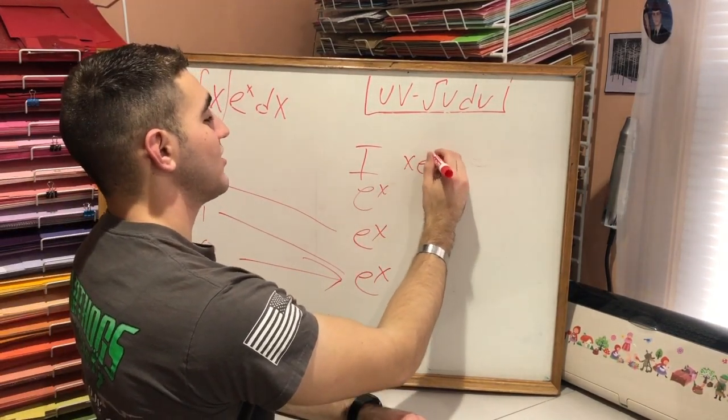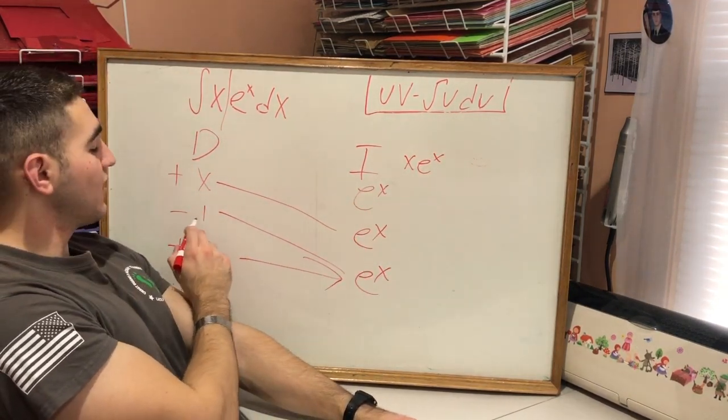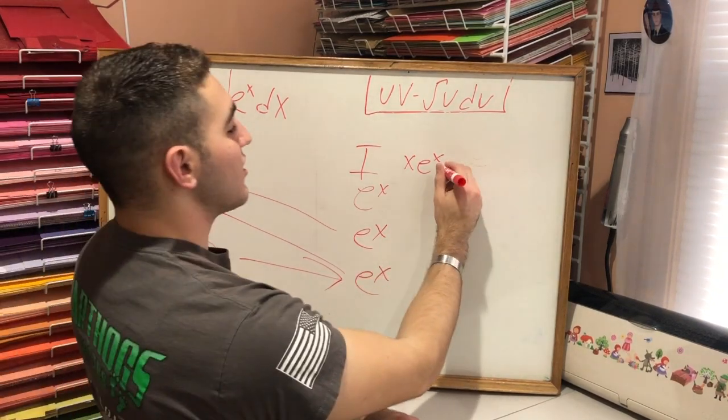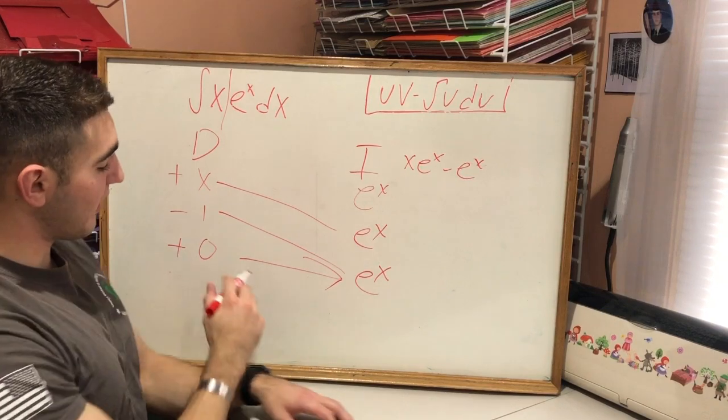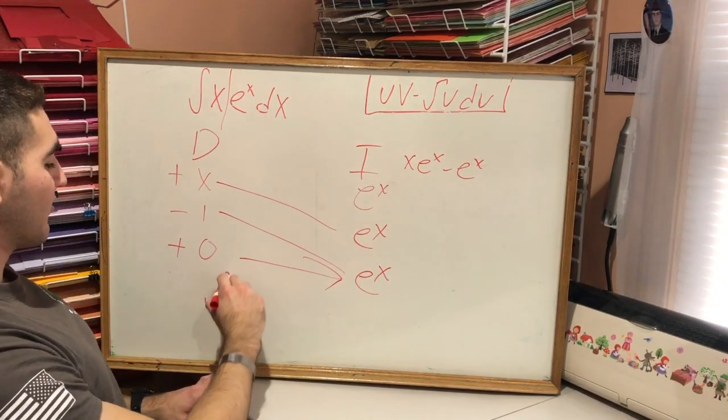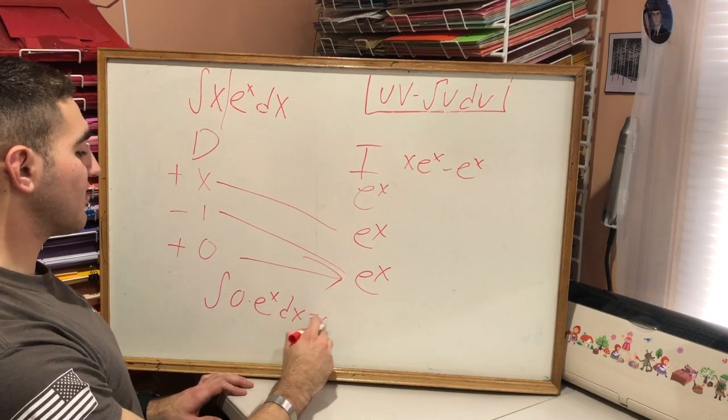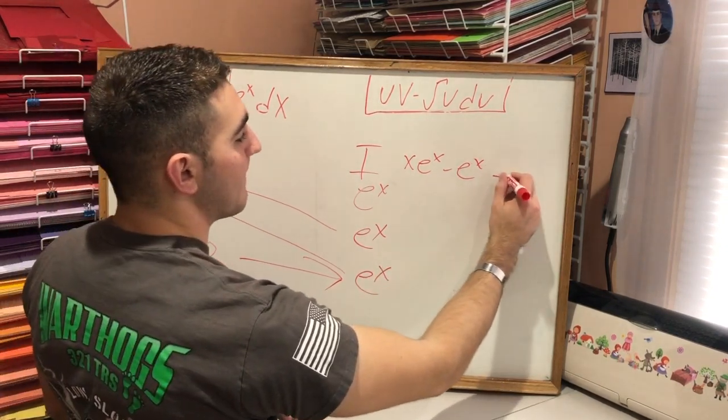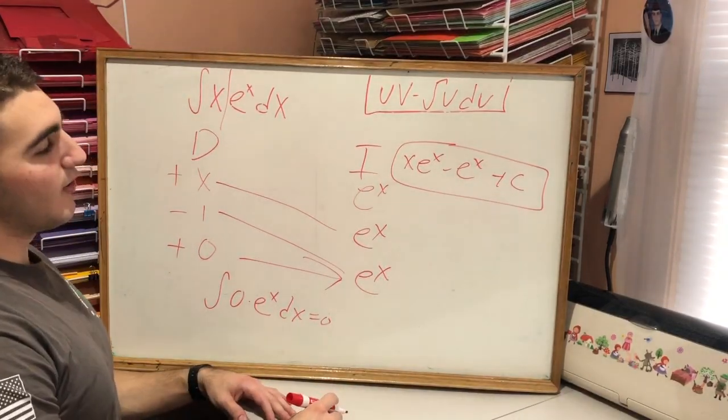Here we go. All right, so x times e to the x is x times e to the x and it's a plus, so we're gonna leave it, nothing in front. And now the next term is gonna be negative because negative 1 times e to the x is minus e to the x. And then now in the end, the last row here, we're gonna take the integral of 0 times e to the x dx, which is just 0, so there's no term. So that is our answer.